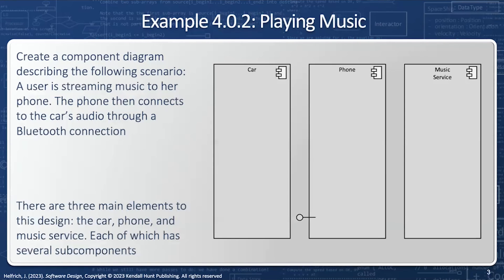The phone provides an interface which the car, a Bluetooth speaker, or a variety of other accessories could consume or not. But in order for the car's music to work, it requires a phone. The music service provides an interface which the phone, a web app, or a variety of other tools can pick up. But for the phone to play music, it requires a music service.